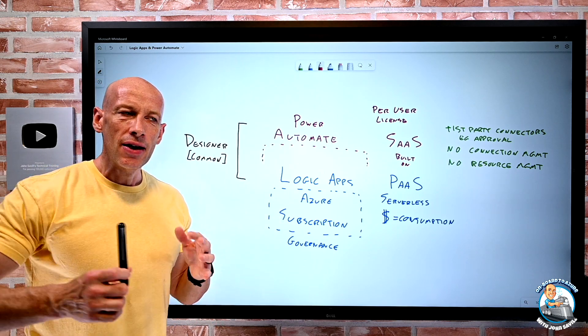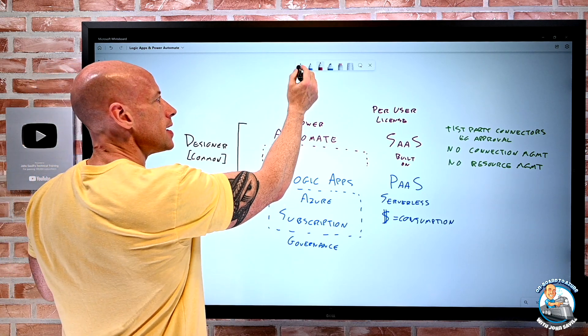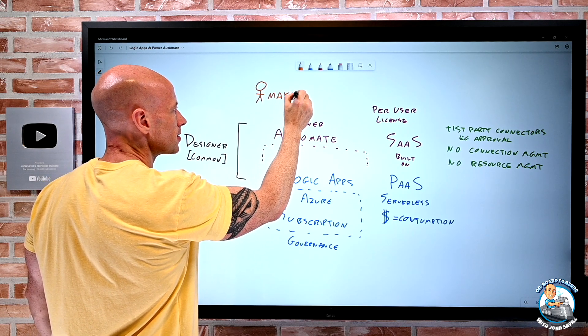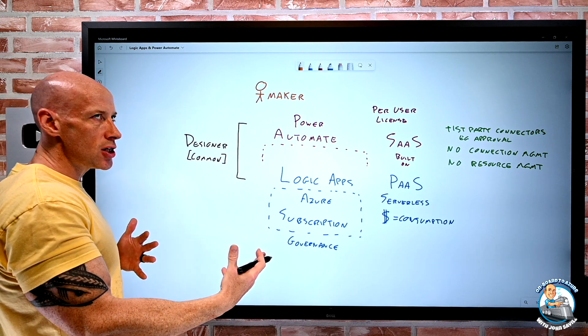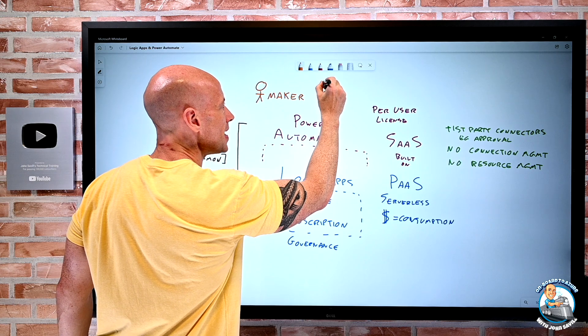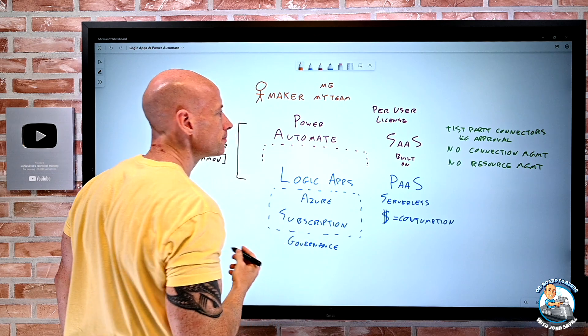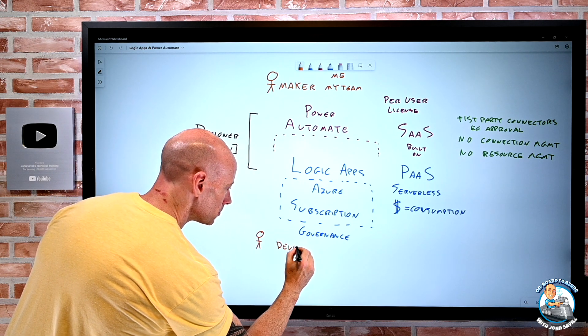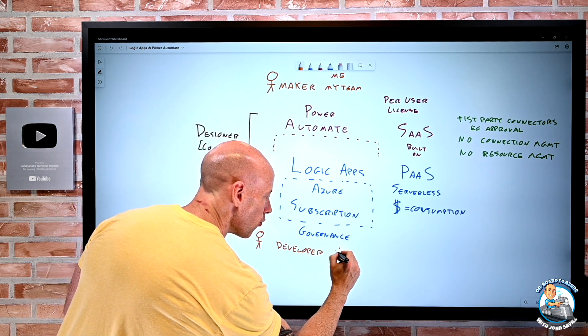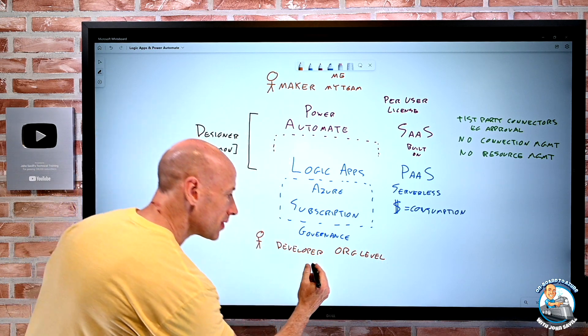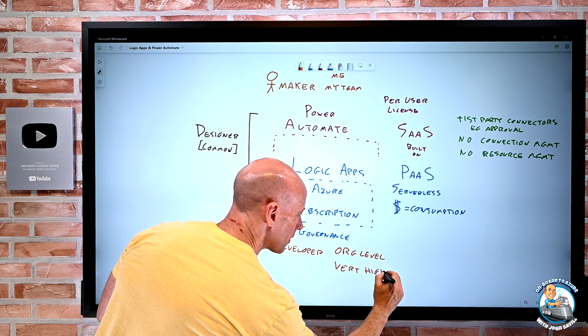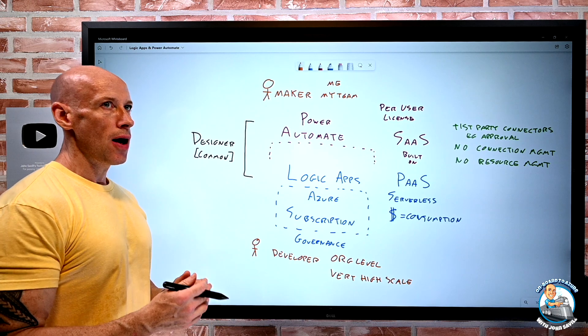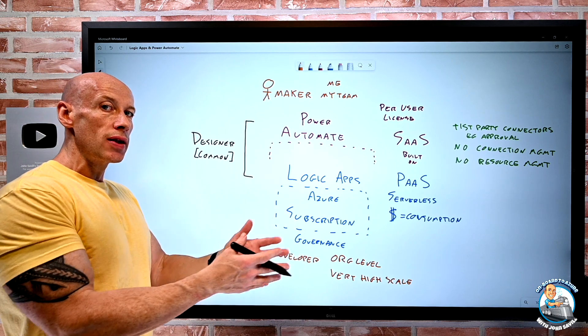So the question becomes, okay, why are there two solutions and which one should I be using? It's actually fairly simple to think about. Power Automate is really targeted at makers. I'm trying to create some automation, maybe from within an Office app or Dynamics or something else that's for me or it's for my team. Whereas Logic Apps is really focused at a developer. I'm trying to create something maybe for my organizational level automation, or it could be something that is just a very high scale. So it doesn't fit within those per user per flow licenses that I have with Power Automate.